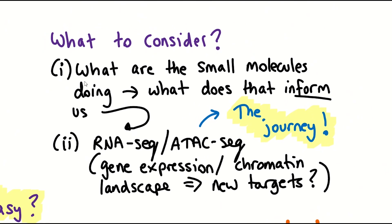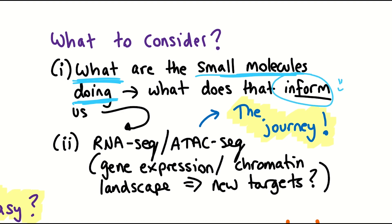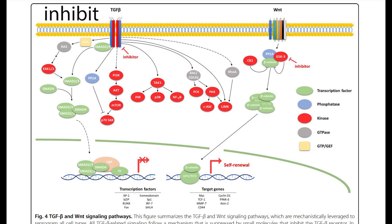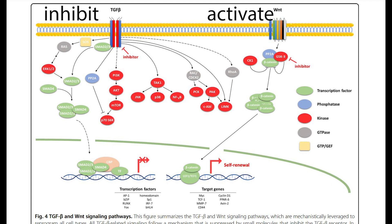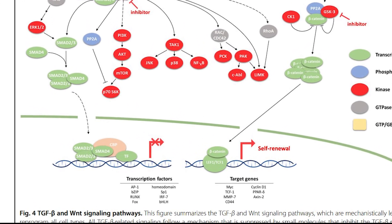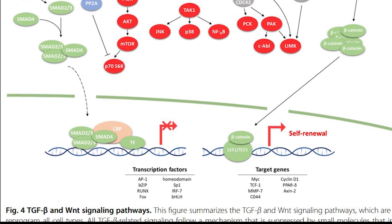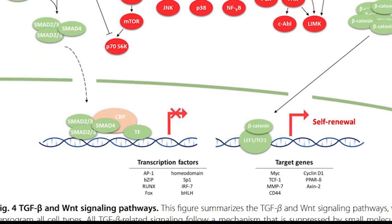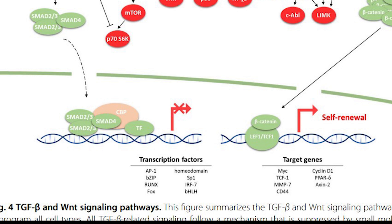What are these chemicals doing? A previously established finding is that to encourage a cell to reprogram, you need to inhibit TGF-beta signaling and activate Wnt signaling. These are two different biochemical signaling pathways that, in a generalised manner, help to turn off genes involved in differentiation and activate genes involved in self-renewal — features that are seen in stem cells.